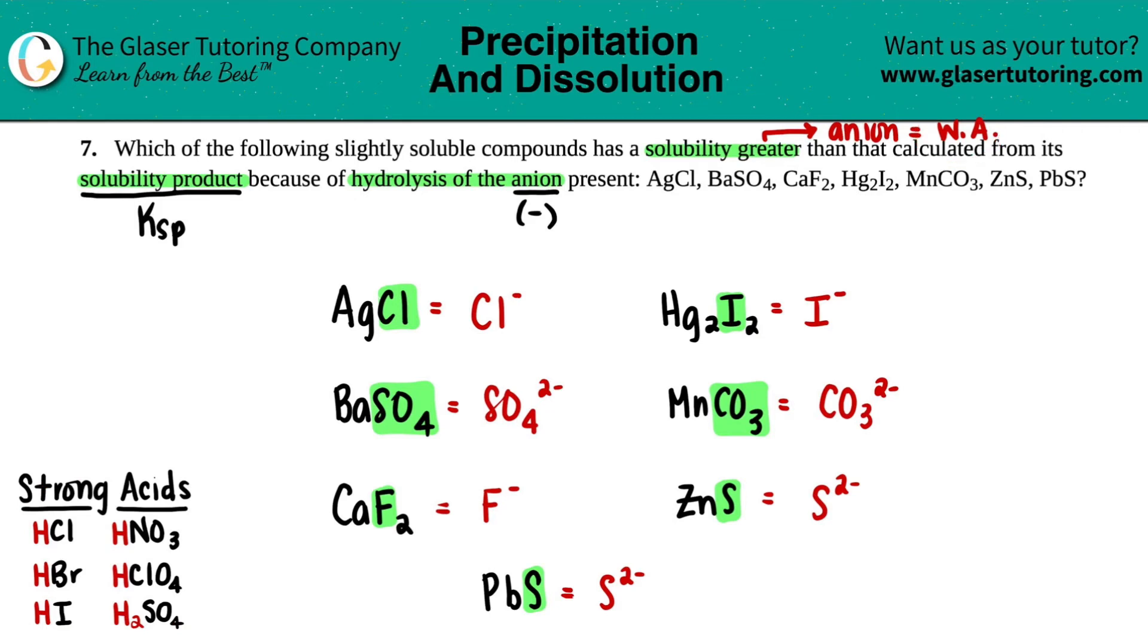We want it to come from a weak acid in order to answer this question. So let's do the first one: Cl. Do I see a Cl in any of these anions in the strong acids? Remember, the anions are the last ones: HCl, HBr, HI, HNO3, HClO4, and H2SO4. Yep, the Cl is right here.